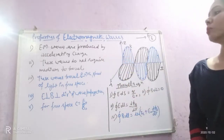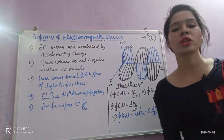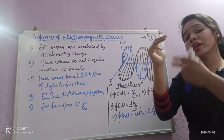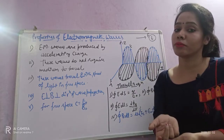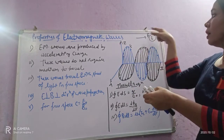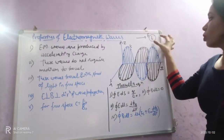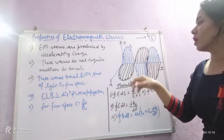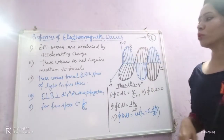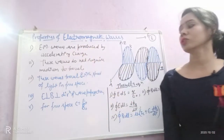So what are the properties of electromagnetic waves? Electromagnetic waves are produced by accelerating charge. In the last video, I explained that an accelerating charge generates an electric field, and since that electric field is changing, it obviously generates a magnetic field. This change in electric field generates a magnetic field, and because of the generation of electric and magnetic fields, electromagnetic waves are produced. So the main source of electromagnetic waves is accelerating charge.